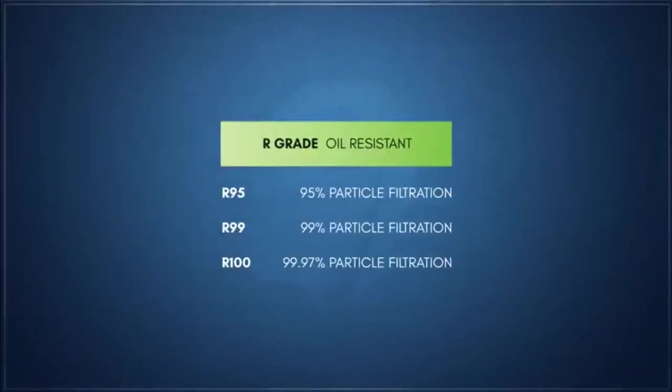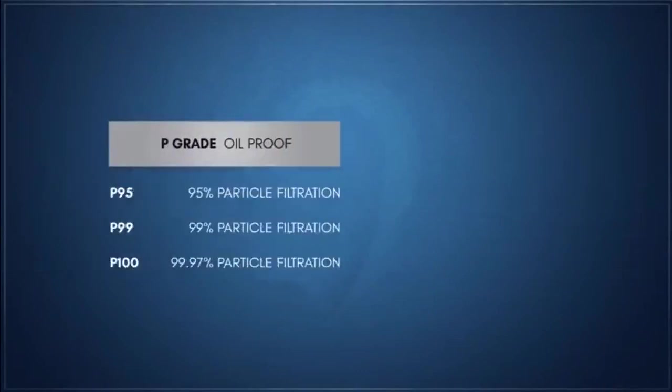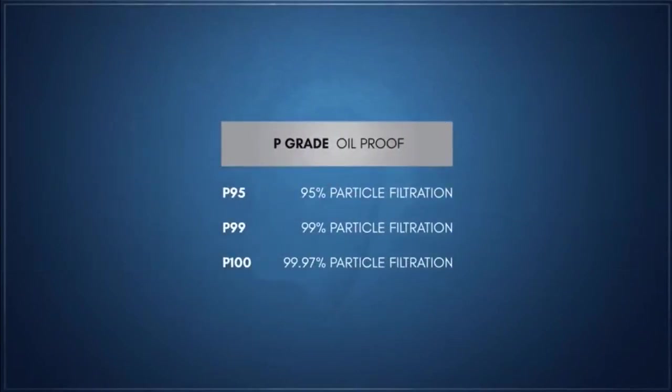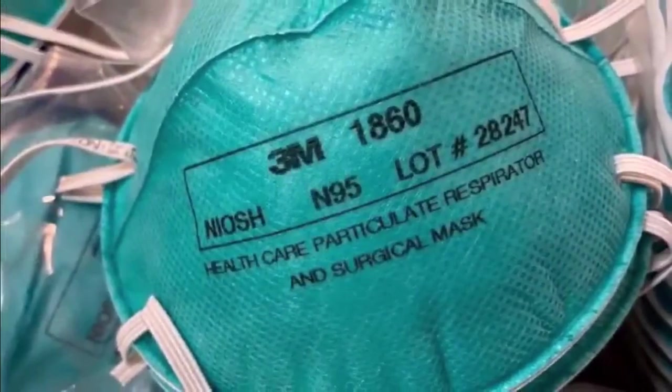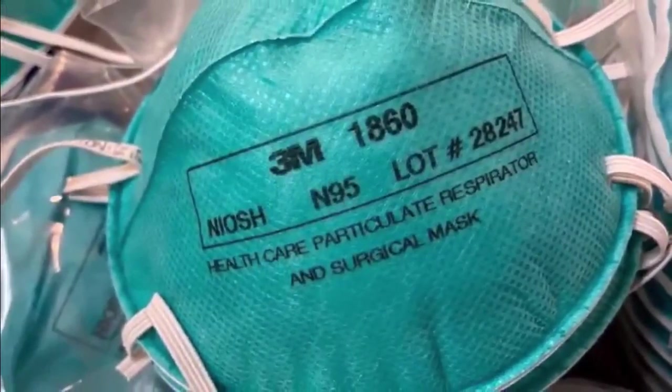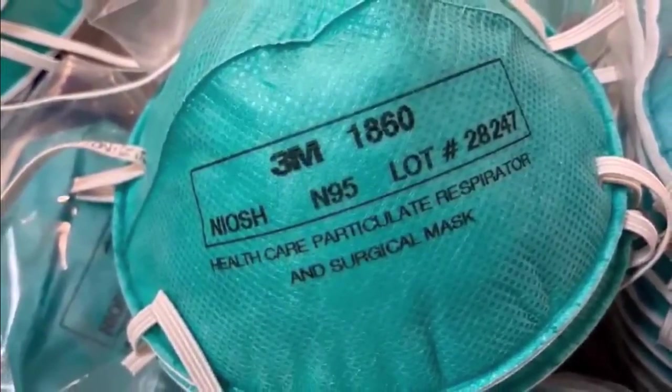Other designations include oil-resistant R and oil-proof P respirators, which are designed to be more durable and maintain filter effectiveness against oily particles in industrial use. Surgical grade N95 respirators possessing fluid resistance were specifically cleared by the United States Food and Drug Administration for medical use.